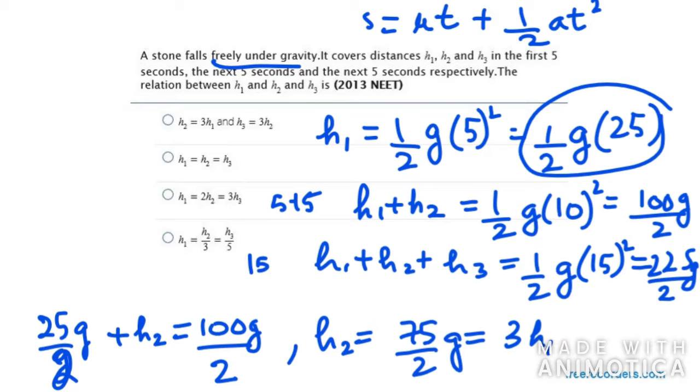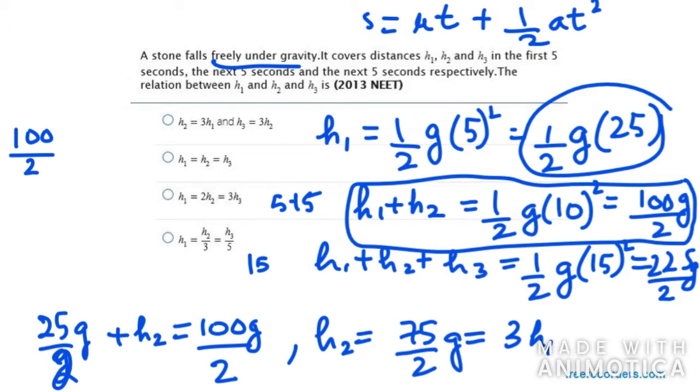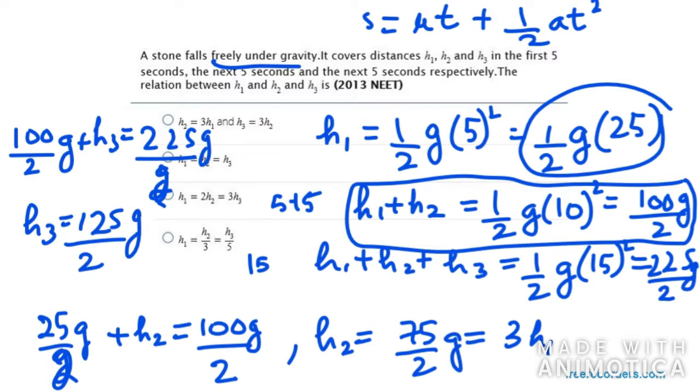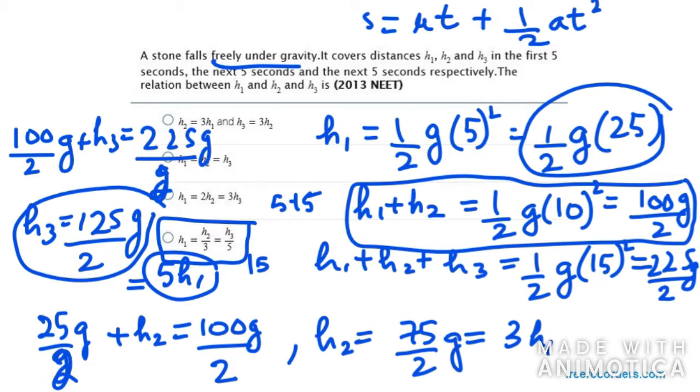Now we need to find the relation between h3 and h1. By putting the value of h1 plus h2 from the second equation into the third equation will give you h3. So h3 will be 225 over 2g minus 100 over 2g, which equals 125 over 2g. If I relate h3 and h1, h3 is actually 5 times of h1. So the relation is h1 equals h2 over 3 equals h3 over 5. The last option is the right answer.